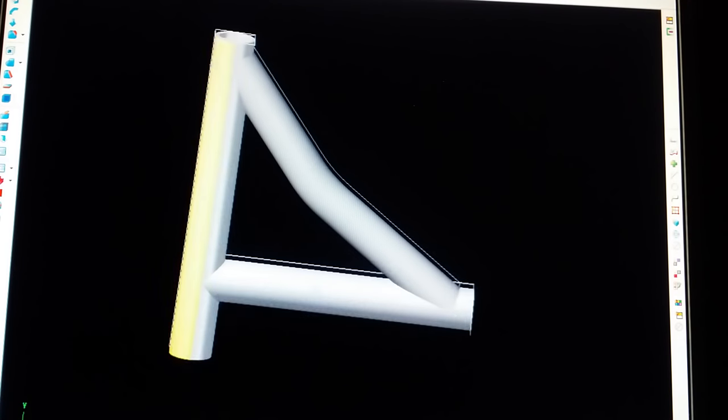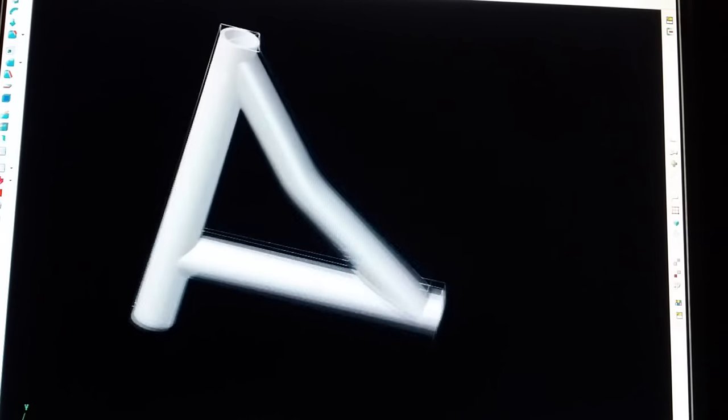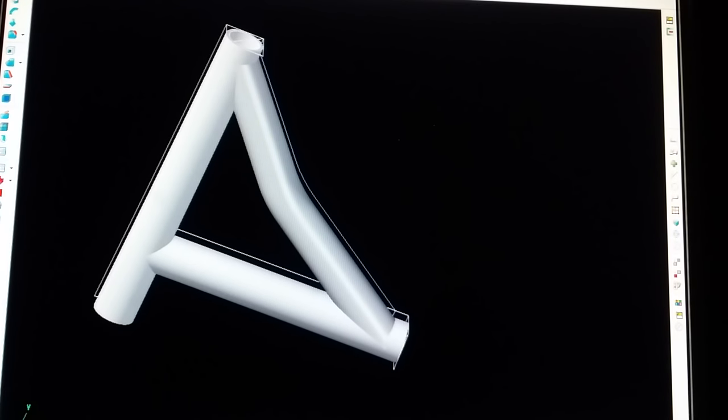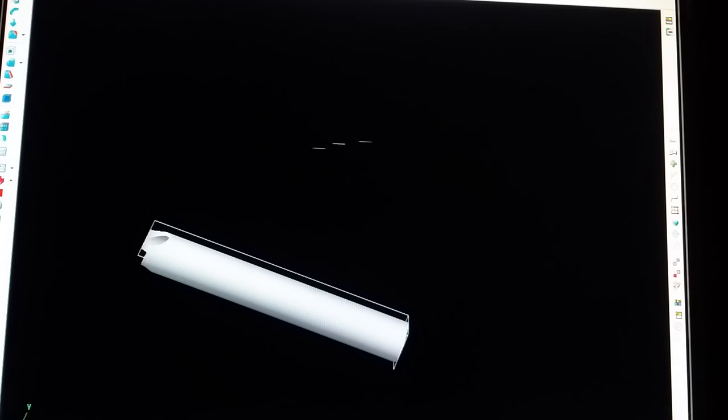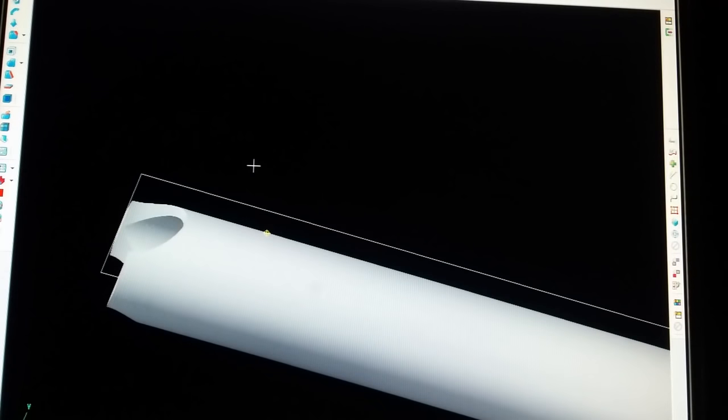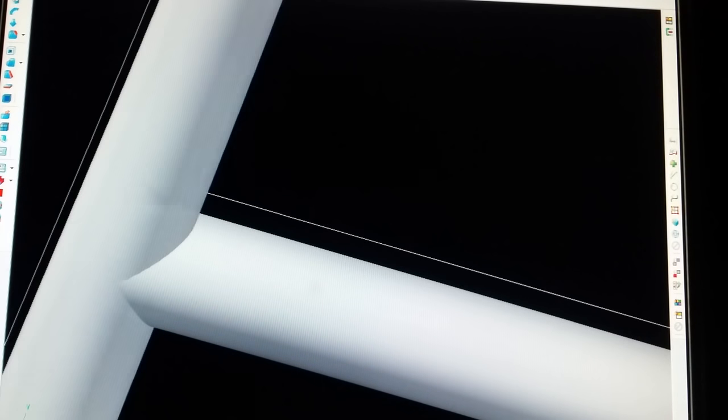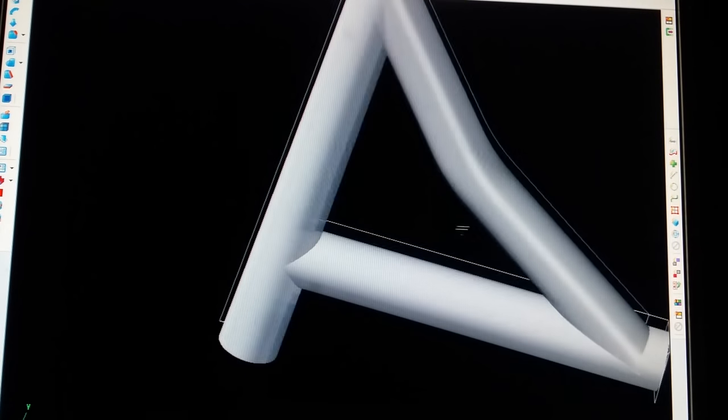Hey, what's up everyone and welcome to another episode of The Fabricator with yours truly. So a few terms here: notching, fish-mouthing, coping, saddling. These are all industry terms used to describe this series of cuts to make one tube mate up to another tube without the gap.